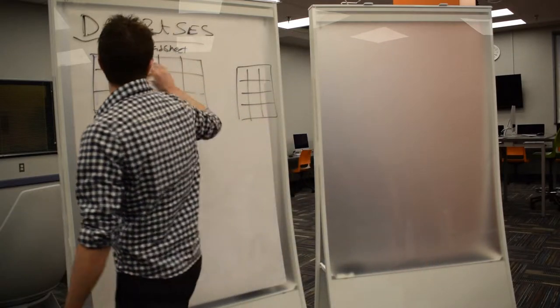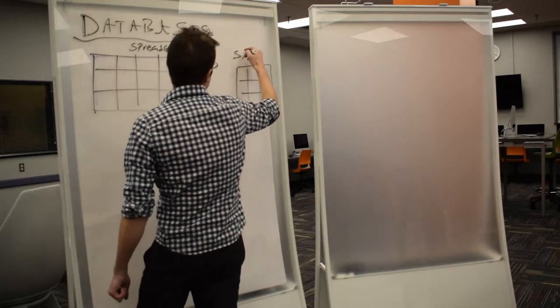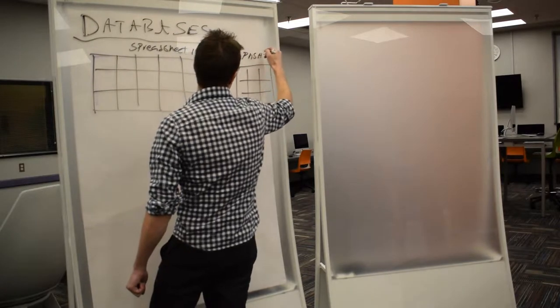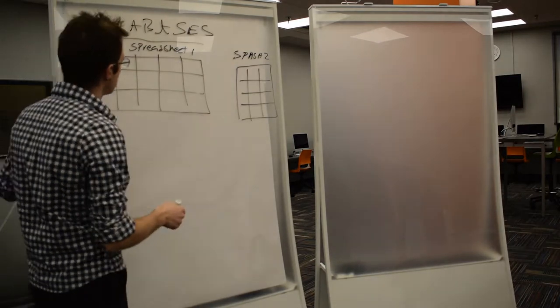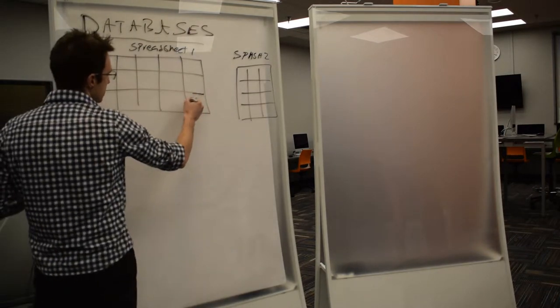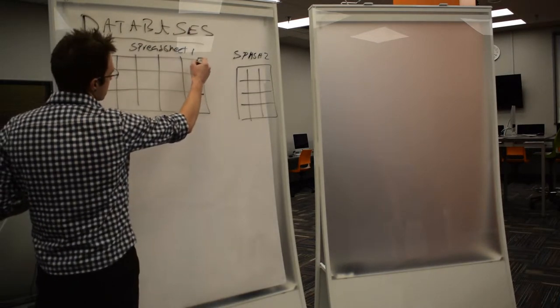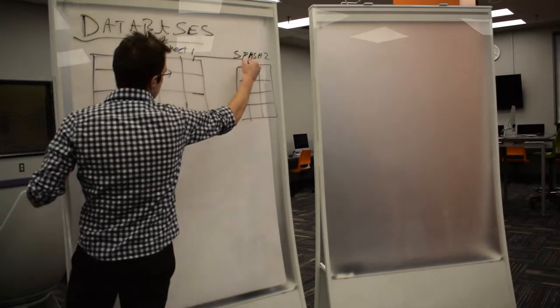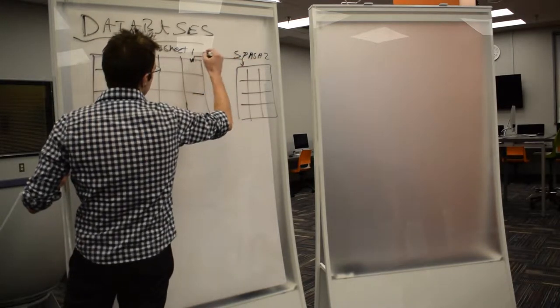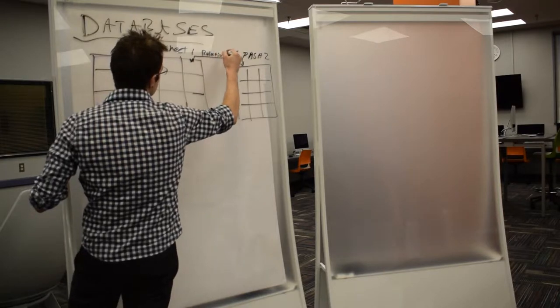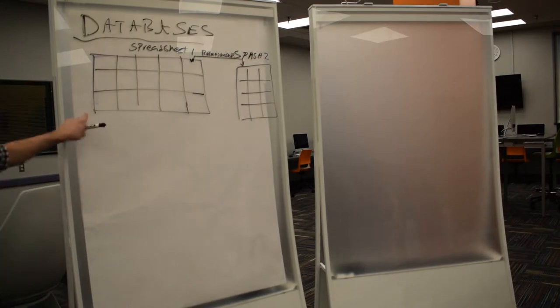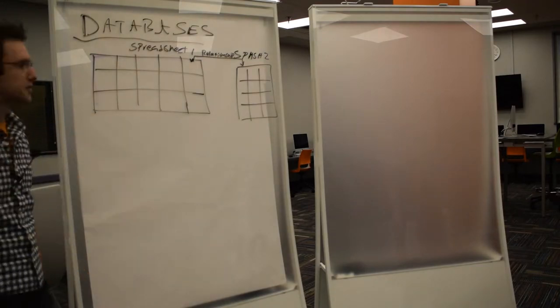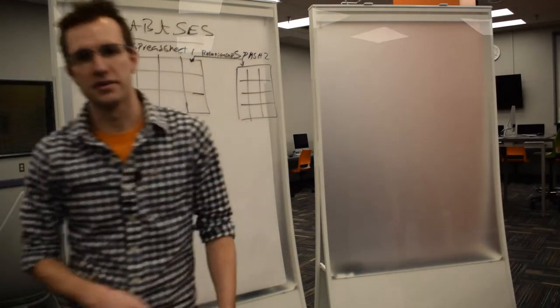So if we have spreadsheet 1 and spreadsheet 2, I've got to do better with my writing since this is going online. Spreadsheet 1 and spreadsheet 2, what we're going to learn about is that the columns between these can be connected in a relationship between those two columns. And it's that relationship between the spreadsheets that we want to be able to understand better today.